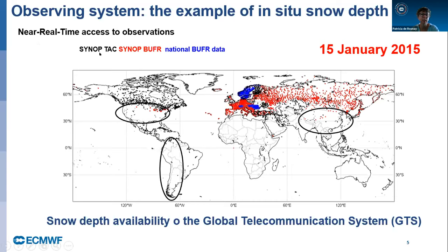On the GTS we have three types of in-situ snow depth reports: SYNOP traditional as a numeric, which is the old format, SYNOP BUFR which is a new format, and additional BUFR in-situ snow depth reports in blue. Whatever the color, you see the coverage of observations we have daily for snow. There are gaps in some areas not because there are no real-time observations available, but because these observations are not shared on the GTS.